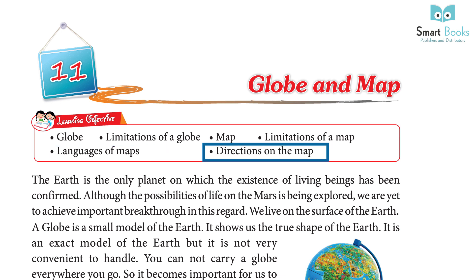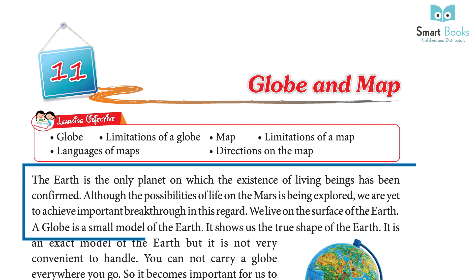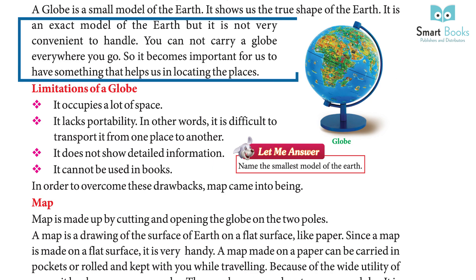The earth is the only planet on which the existence of living beings has been confirmed. Although the possibilities of life on Mars are being explored, we are yet to achieve an important breakthrough. We live on the surface of the earth. A globe is a small model of the earth — it shows us the true shape of the earth. It is an exact model, but it is not very convenient to handle. You cannot carry a globe everywhere you go.